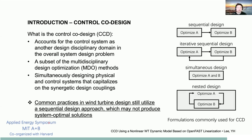Control co-design accounts for the control system as another design disciplinary domain in addition to the physical system in the overall system design problem. It is a subset of multi-disciplinary design optimization that simultaneously designs physical and control systems, capitalizing on synergetic design coupling between disciplines. In contrast, common practice in wind turbine design still uses a sequential approach — designing the physical system first, then the control system — which may not produce a system-optimal solution.